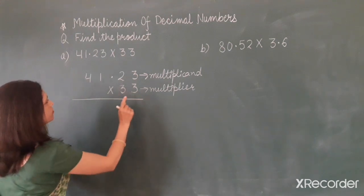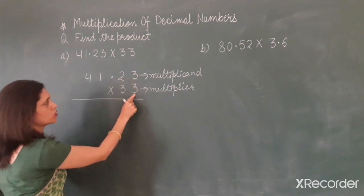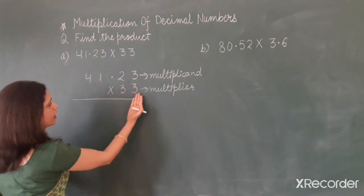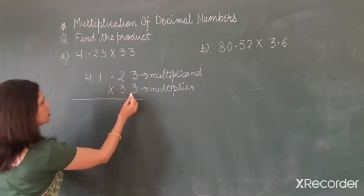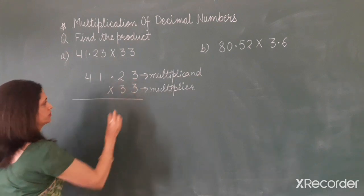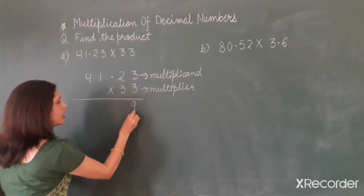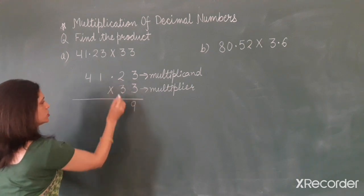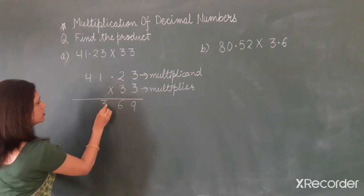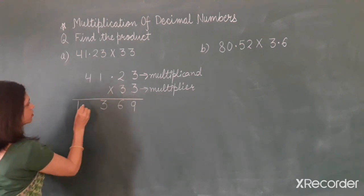First we will multiply this number by three, because we always start multiplication from right to left. Three threes are nine, three twos are six, three ones are three, three fours are twelve.